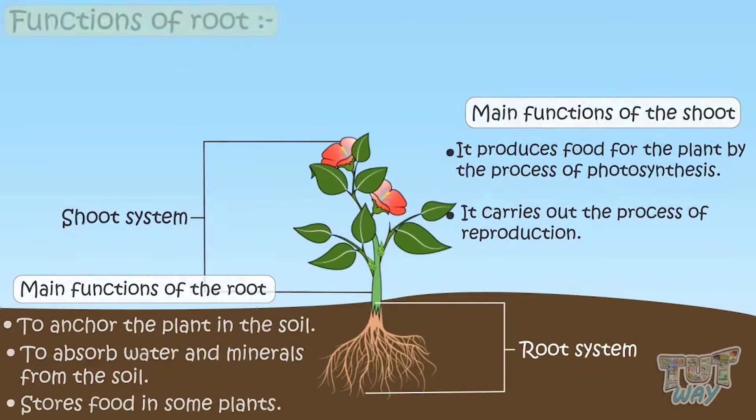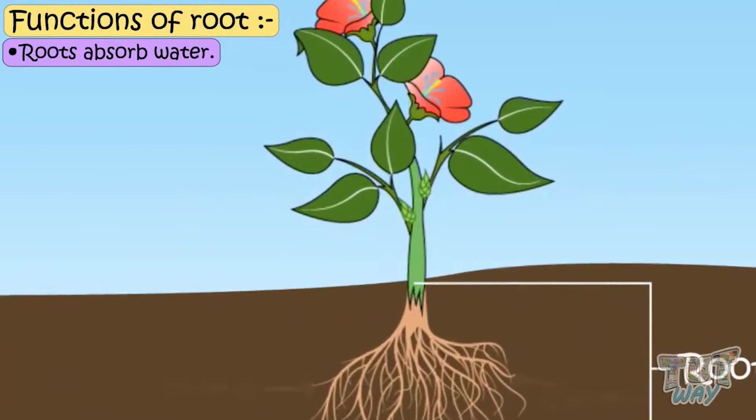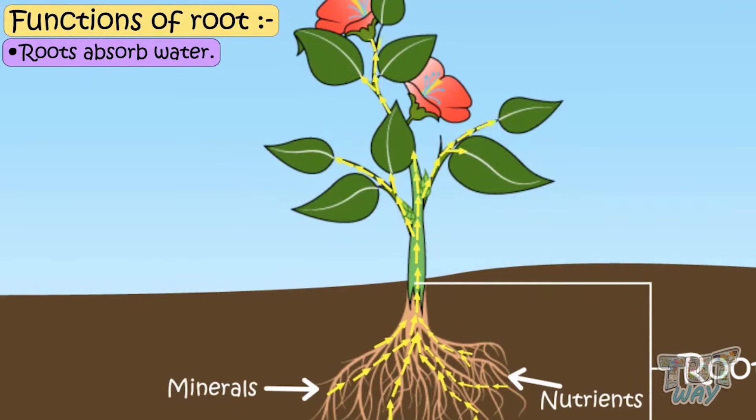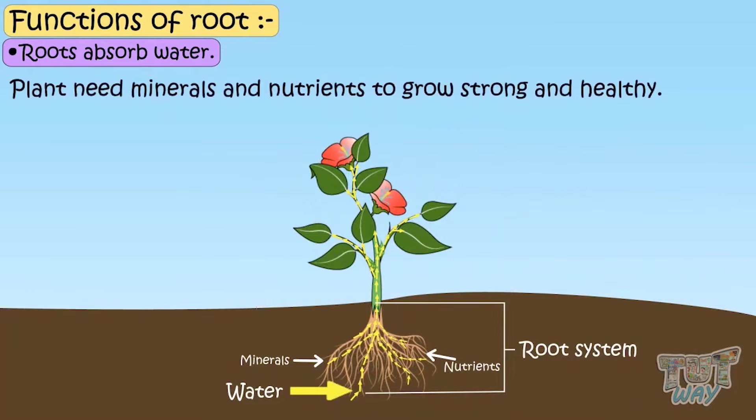Now let's learn the function of roots in detail. Roots absorb water from the soil, which in turn provides the plants with nutrients and minerals. As we need food and water to live, same way, plants need these minerals and nutrients to grow strong and healthy.